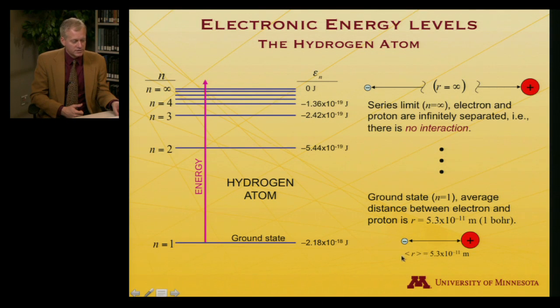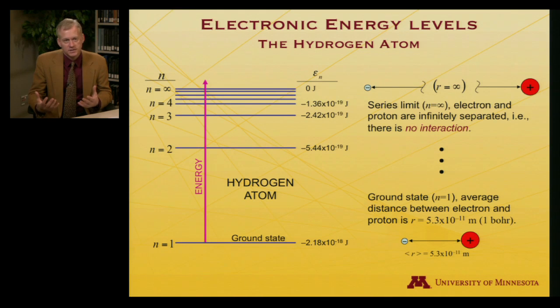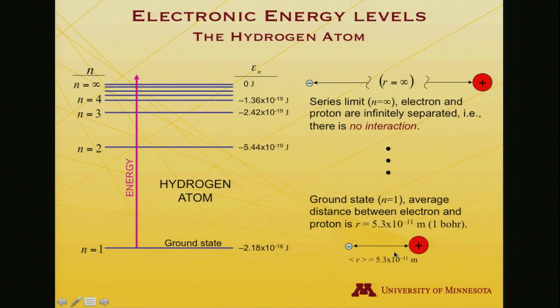The distance, the average distance, this is actually an expectation value, is what we would call that in quantum mechanics. So what is the most likely distance you would get after averaging over a large number of experiments is 5.3 times 10 to the minus 11th meters. And so if you remember, an angstrom is about 10 to the minus 10th meters. It's about a half an angstrom. This unit of distance actually defines the atomic unit of distance, which is called the bohr. So one bohr is defined by a hydrogen atom in its ground state.